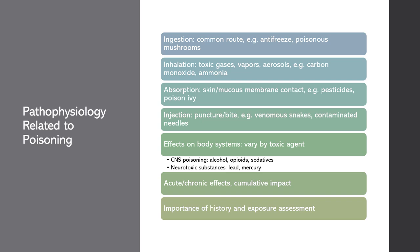The effects of poisoning on body systems can vary widely depending on the toxic agent involved. Poisoning of the central nervous system can result from exposure to toxins like alcohol, opioids, or sedative medications, which can suppress the respiratory drive, leading to respiratory arrest or even death. In contrast, neurotoxic substances like lead or mercury can cause cognitive impairment, peripheral neuropathy, and behavioral changes. Understanding this pathophysiology helps us better assess, treat, and educate patients. Effects may be acute or chronic, and some toxins have a cumulative effect on the body over time.